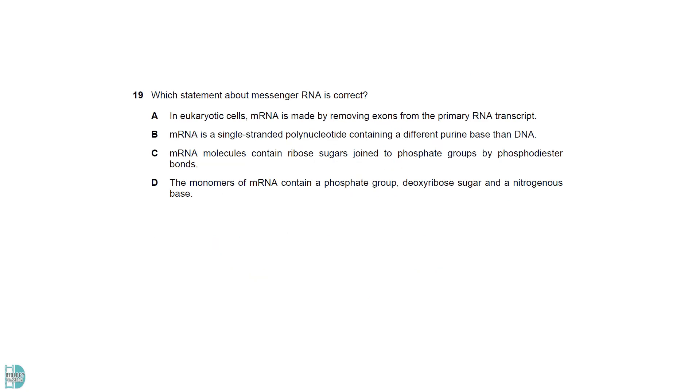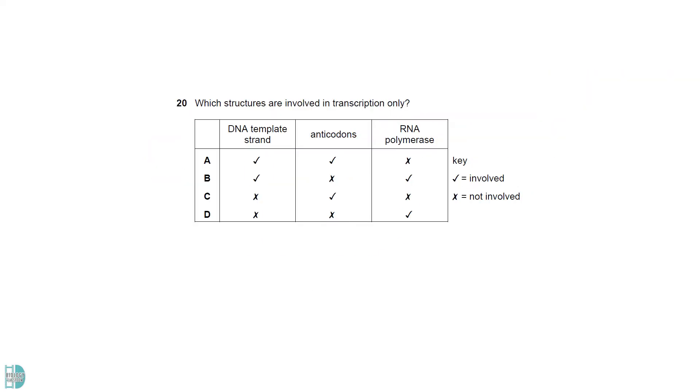A is incorrect, as the parts being removed are introns, not exons. B is wrong, since the difference between DNA and mRNA is the presence of thymine or uracil. They are pyrimidines, not purines. C is the correct statement. D is wrong because an mRNA nucleotide contains a ribose sugar, not deoxyribose sugar. Both DNA template strand and RNA polymerase are involved in transcription, but not translation. Anticodons are involved in translation only, but not transcription.